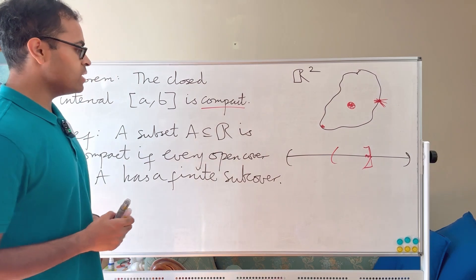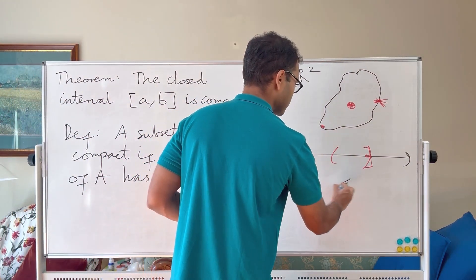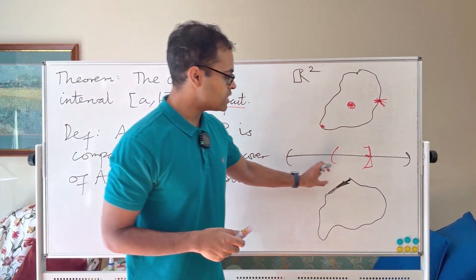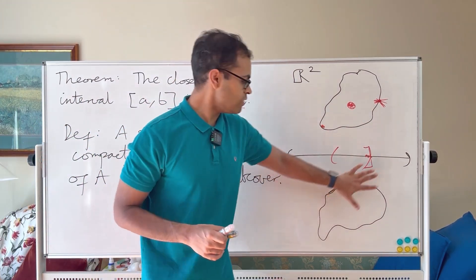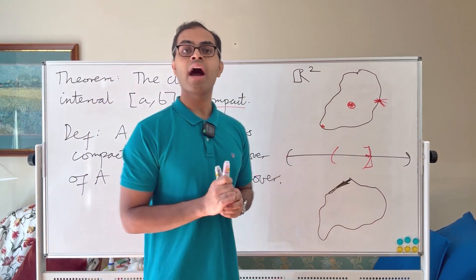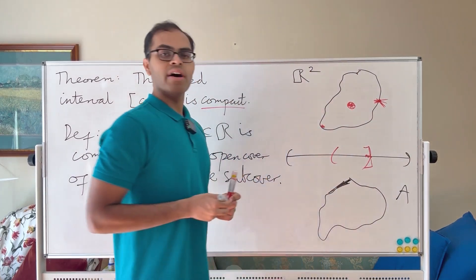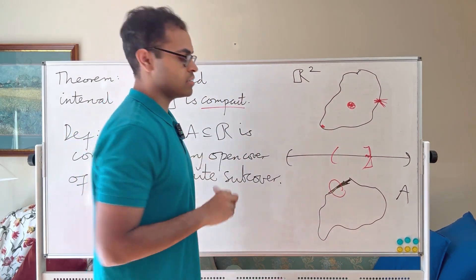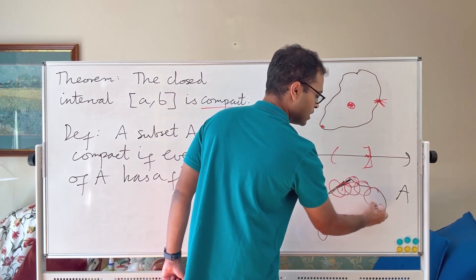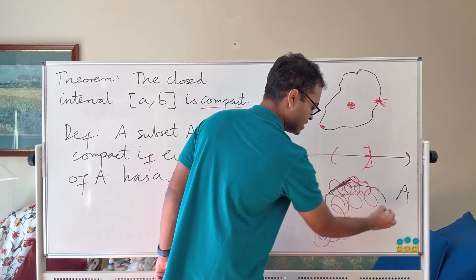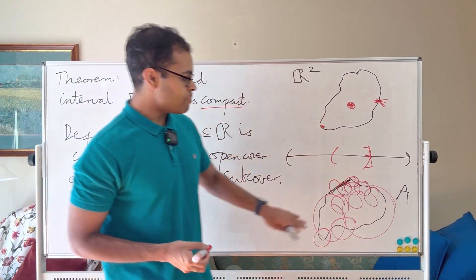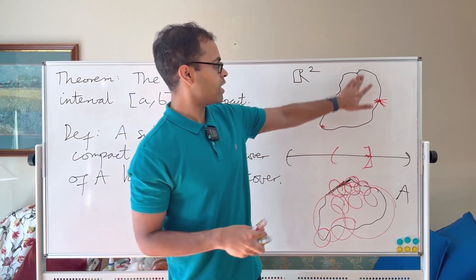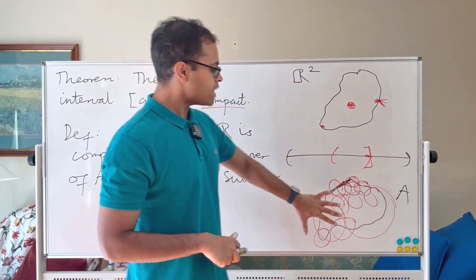What does open cover mean? Suppose I have some set in R2 — a blob. An open cover is a collection of open sets that covers everything inside that blob. Classic examples are disks without their boundary — there's always wiggle room inside. You can cover the set with overlapping open disks or open blobs. It doesn't have to be disks; it can be any open sets. That collection is called an open cover, and you could have infinitely many of them.